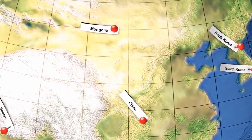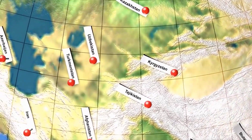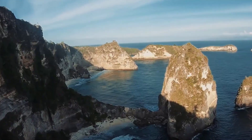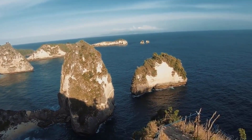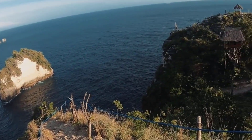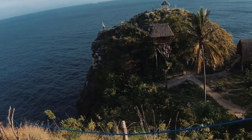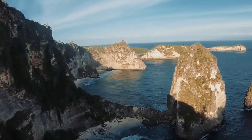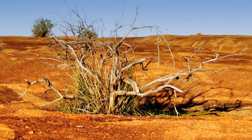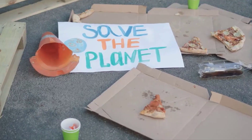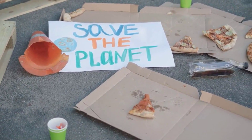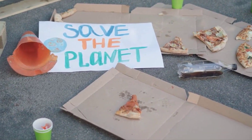Asia, home to millions, would witness vast changes. Coastal areas in China, Bangladesh, and India would be submerged, displacing populations and triggering a cascade of societal challenges. Australia, predominantly arid, would gain a new inland sea while losing its coastal regions. The environmental and societal repercussions would be immense.